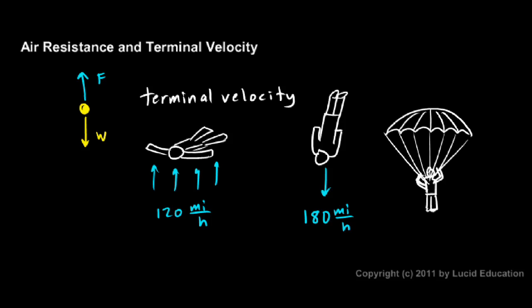Now the one point of confusion that some people have about this. If you're falling at terminal velocity and the weight is equal to the force, or the force of air resistance is equal to the weight, those forces are equal, and the net force is zero, then why don't you stop? Some people ask. If the net force is zero, shouldn't you simply stop?